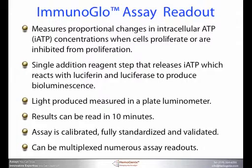ImmunoGlow measures the proportional changes in intracellular ATP concentrations when cells proliferate or are inhibited from proliferation. This involves a single-addition reagent step that releases intracellular ATP, which then reacts with luciferin-luciferase to produce bioluminescence in the form of light. The light produced is measured in a plate luminometer and is read after 10 minutes.